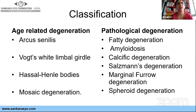So what are corneal degenerations? By definition, these are conditions in which normal corneal cells undergo some degenerative changes, which may be under the influence either of age or some pathological condition. Dependent on this, a classification is made into age-related degenerations and pathological. The most important ones in the pathological are band-shaped keratopathy, Salzmann's, fatty degenerations, and spheroidal.